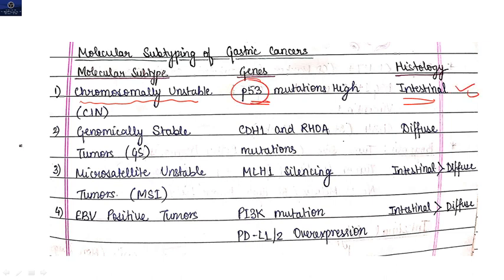Then genomically stable tumors - here CDH1 and RHOA mutation is seen, and it is of diffuse type. Then microsatellite unstable tumors - MLH1 silencing will be seen, and here intestinal mode compared to diffuse.